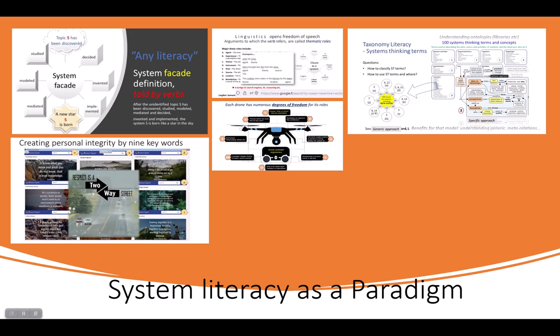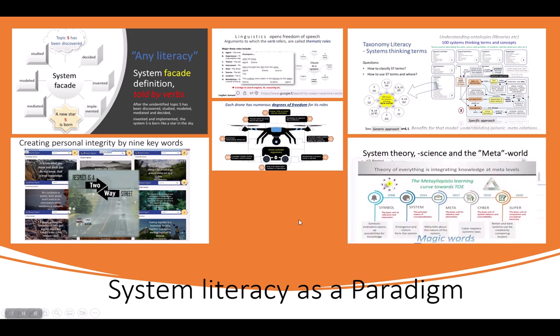This is about psychology, describing the personality of a person. The following talks about the most important words making our world very much faster: system, meta, cyber, and super, and how they are affecting our life in the future.